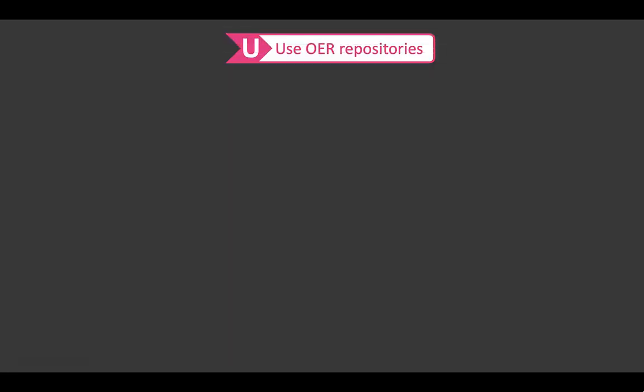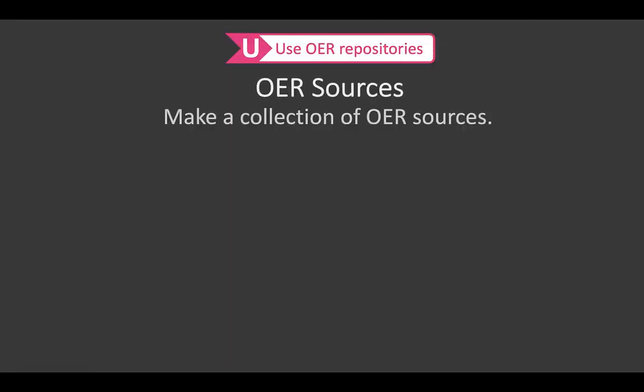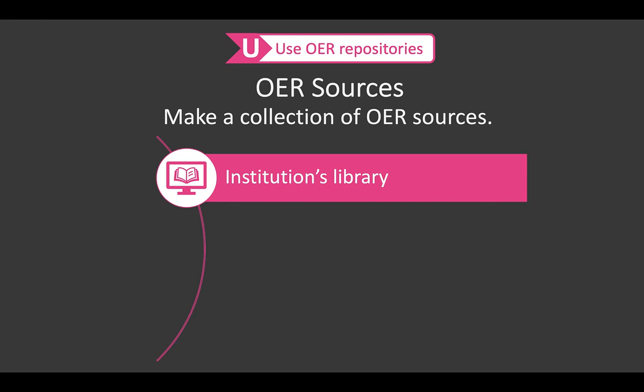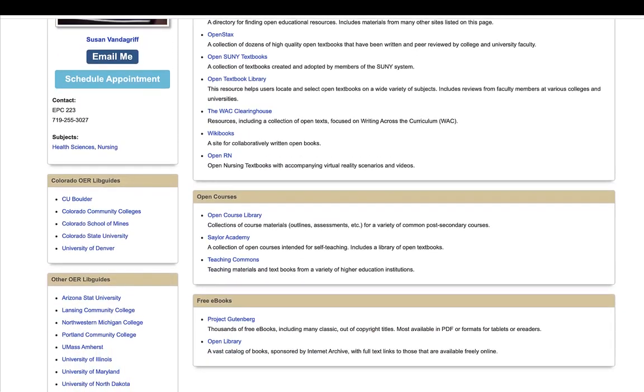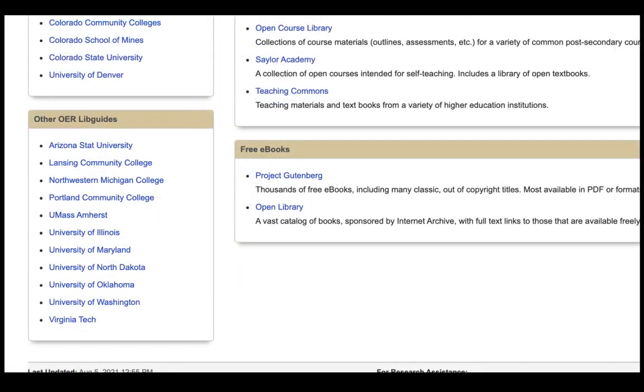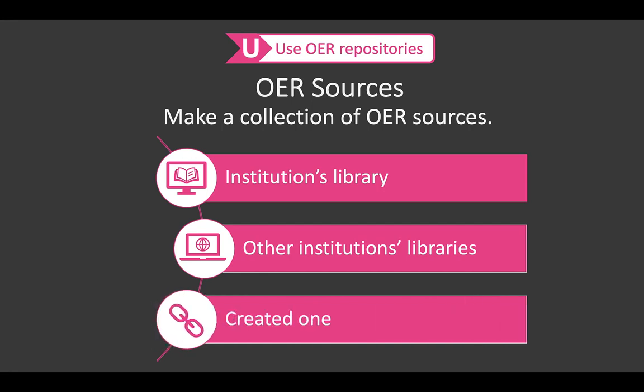Once the foundation for OER implementation is established through the five W's, the quest for these resources begins. Because locating specific OER can be an overwhelming and time-consuming process, streamline this process through making a collection of OER sources. Begin with your institution's library — does it offer resource lists or library guides for OER? If not, identify who might be able to assist with that process. Another option is to utilize the same from other institutions. Creating an extensive OER repository list that can be readily distributed is also an effective way for assisting in the OER search process.